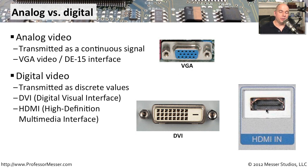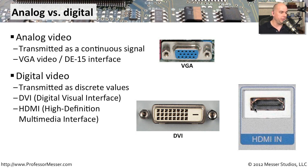Many modern monitors use a digital signal to provide the video display. A DVI port — Digital Visual Interface — can provide digital output, as can the very common HDMI interface, which can output to a computer monitor or even a commercial television screen. You just want to be sure that if you're extending the signal over a long cable, it's able to carry that signal all the way from your computer to your display device.